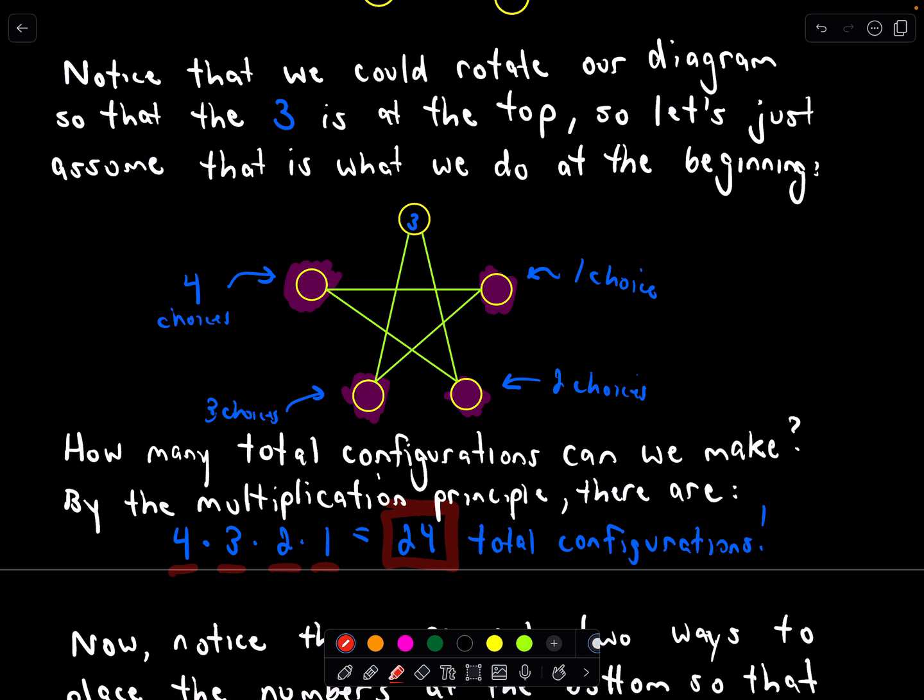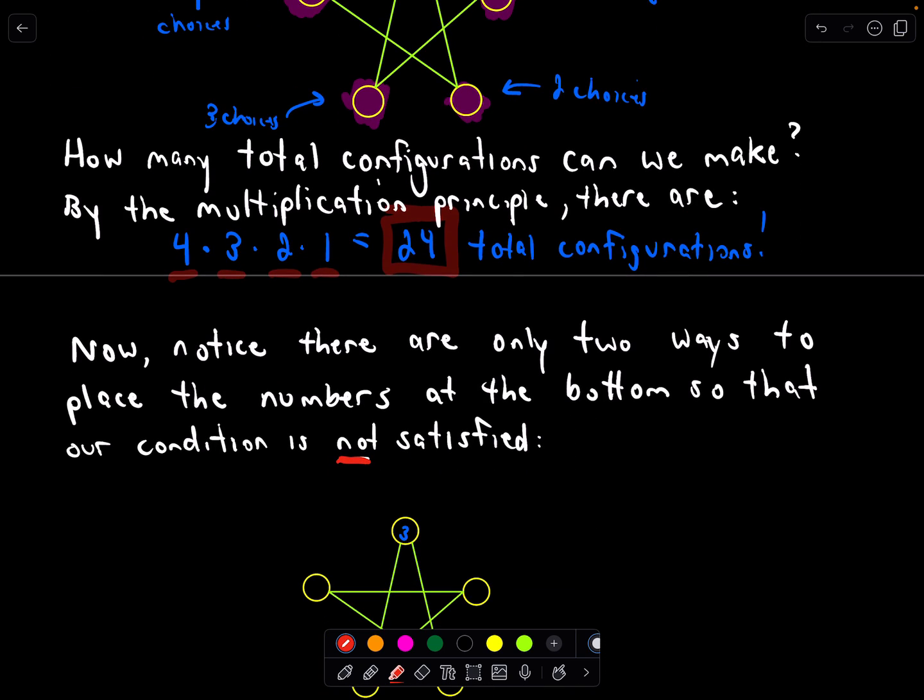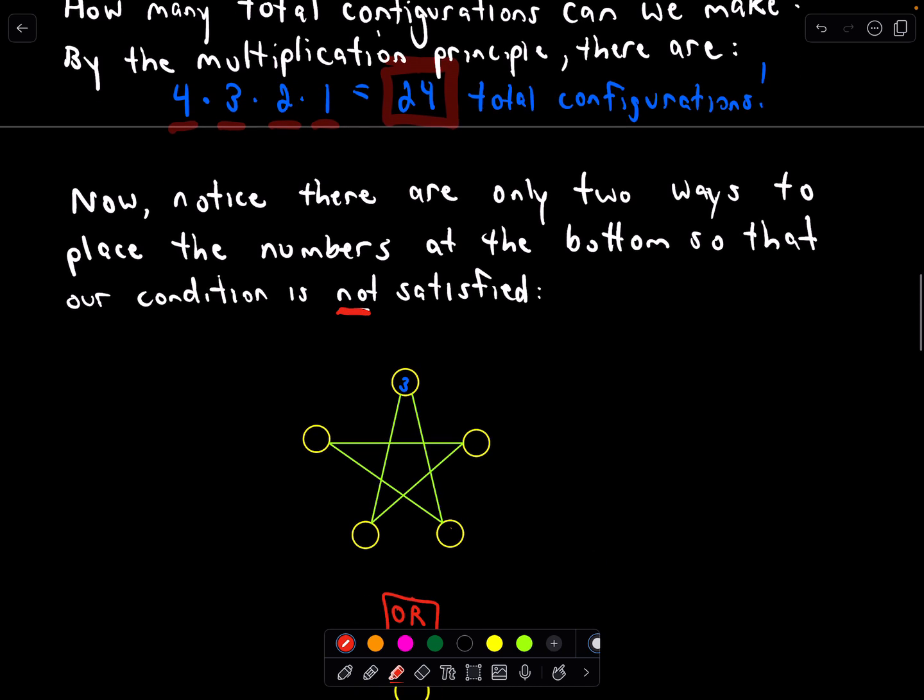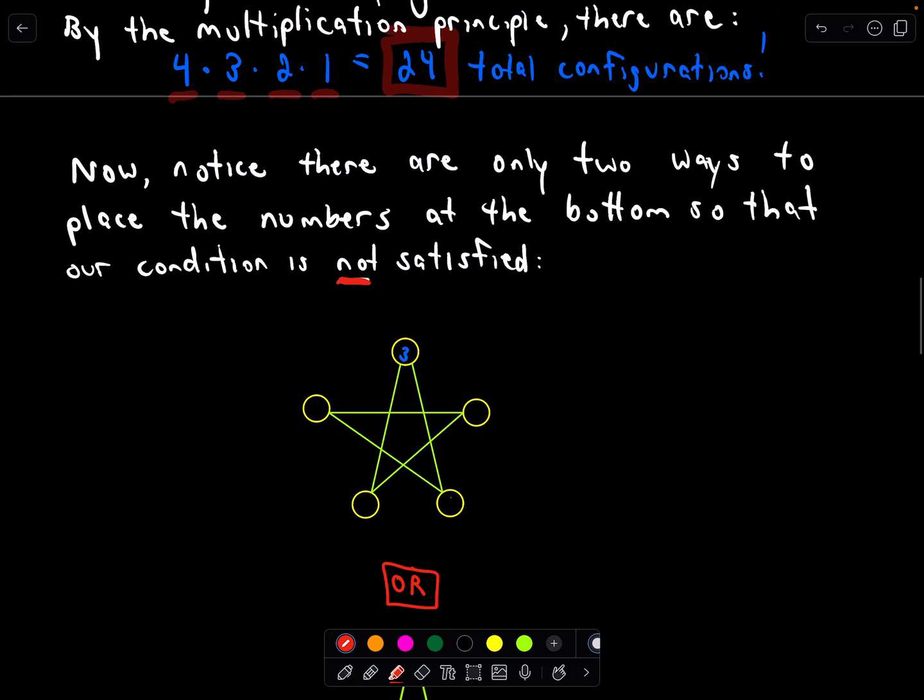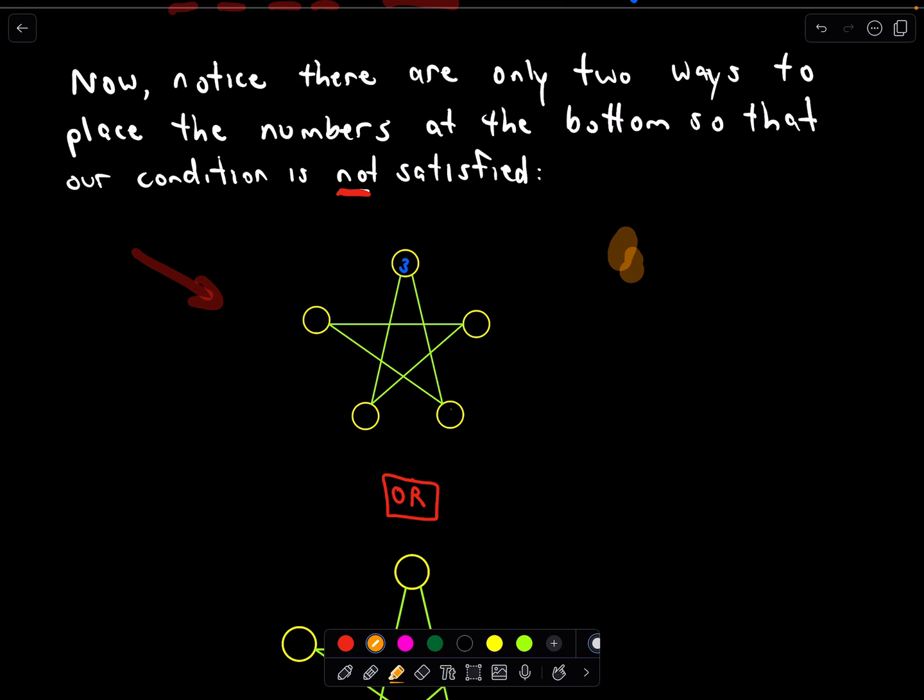So now let's think about this. The idea is, we're going to notice that there are only two ways to place the numbers at the bottom so that our condition is not satisfied. So how can I proceed to fill it in so that our conditions are not satisfied? Well, I've got the numbers 1, 2, 3, 4, and 5. I've already put the 3 in there. If I don't want the condition to be satisfied, I don't want a 2 or a 4 to be at the bottom, because then they'll be connected to a 3, and that satisfies that condition.